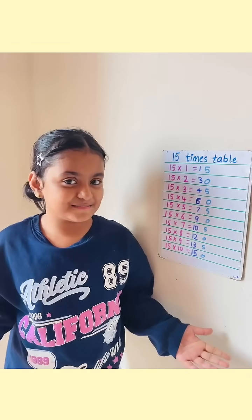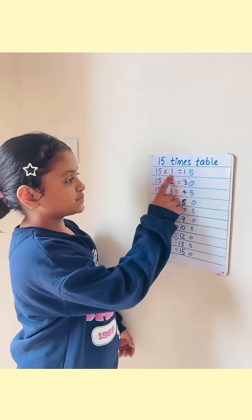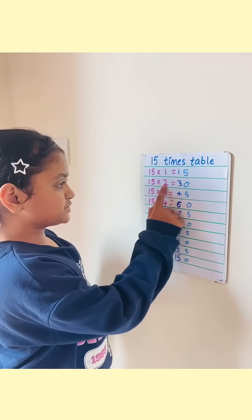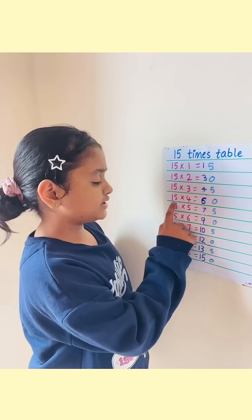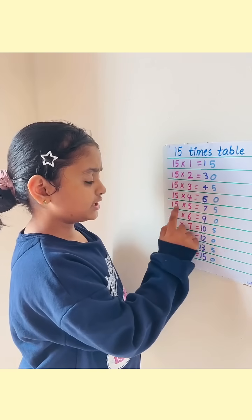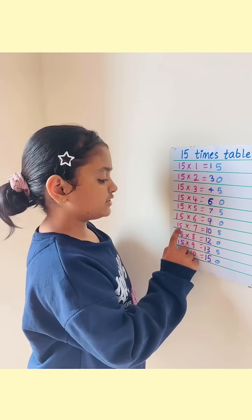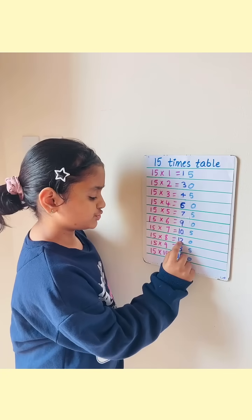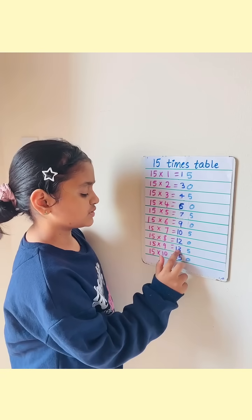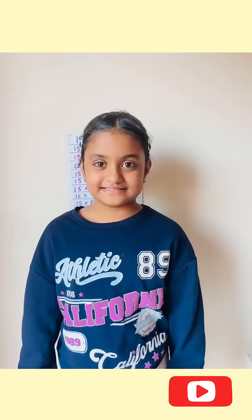Now here is the magic of 15 times table. Let's read it once. 15 times 1 is 15. 15 times 2 is 30. 15 times 3 is 45. 15 times 4 is 60. 15 times 5 is 75. 15 times 6 is 90. 15 times 7 is 105. 15 times 8 is 120. 15 times 9 is 135. 15 times 10 is 150. In our next video it's all about key chocolate.